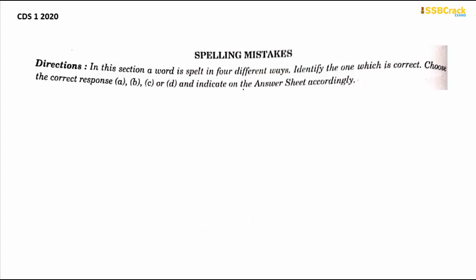Before we start, it's important to read the directions: 'In this section, a word is spelled in four different ways. Identify the one which is correct. Choose the correct response — A, B, C, or D — and indicate on the answer sheet accordingly.' Basically, you have to choose the correctly spelled word. That will be your answer.